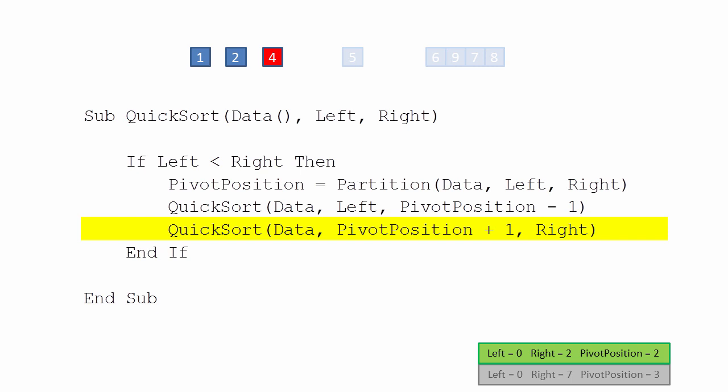The second invocation is back in control, resuming from where it left off. It still needs to process the sublist to the right of its pivot position, or at least check to see if there is one. Quicksort is invoked again, and the value 3 is passed in as the left pointer.